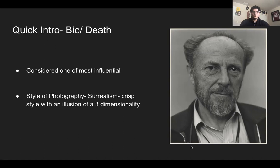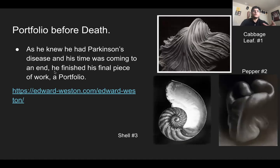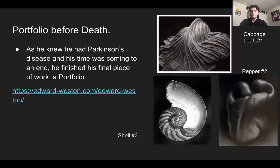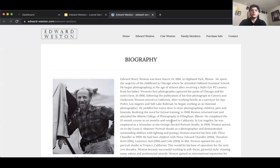Throughout the years of his career, he created a portfolio. Knowing he had Parkinson's disease and that his time was limited, he wanted to finish his final piece — the portfolio. Some examples include 'Cabbage Leaf,' 'Pepper,' and a shell photograph, with most of the shell images taken in Carmel.